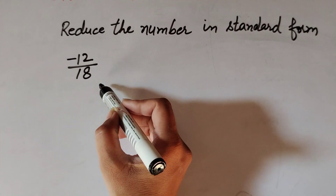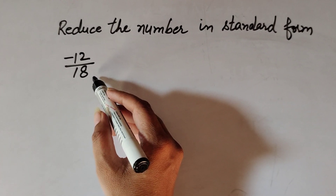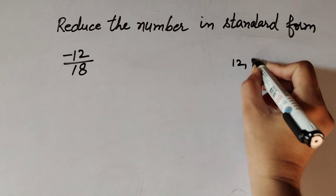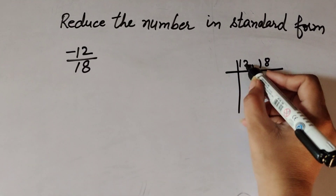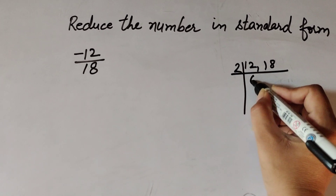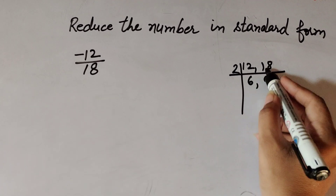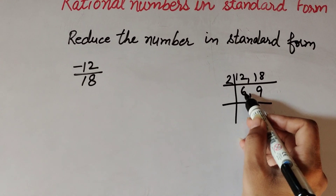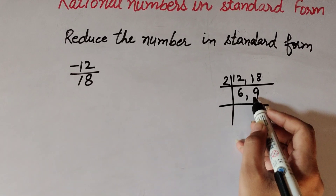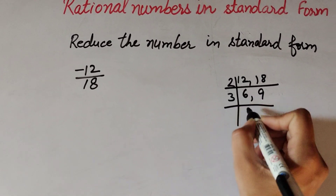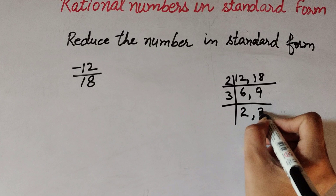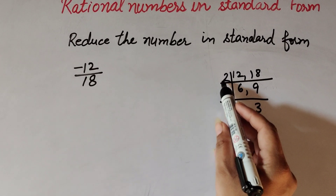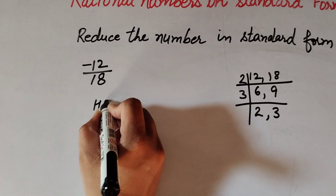Let's take one more example: -12/18. We change this number into standard form by dividing numerator and denominator by the HCF. Both 12 and 18 are divisible by 2. 12 divided by 2 gives 6, and 18 divided by 2 gives 9. Now 6 is divisible by 2 but 9 is not, so we use 3. 6 divided by 3 gives 2, and 9 divided by 3 gives 3. Since 2 and 3 have no common factor, the HCF of 12 and 18 is 2 × 3 = 6.